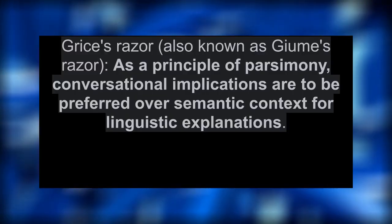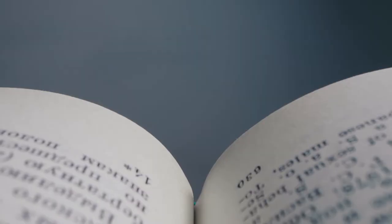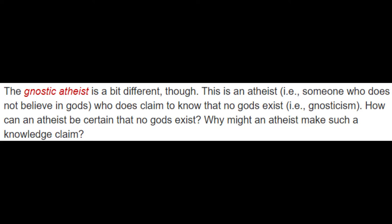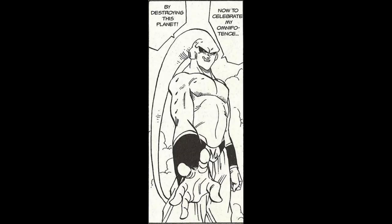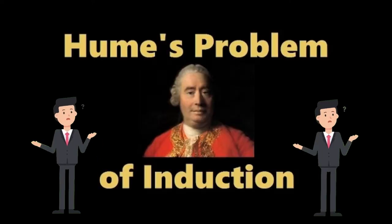Grice's razor also seems complex on the surface but is pretty simple. Wikipedia defines it as a principle of parsimony: conversational implications are to be preferred over semantic context for linguistic explanations. Simply put, Grice's razor says that context for a word or phrase should be preferred to the textbook definition. For example, in a conversation about whether God exists, someone calls themselves a Gnostic Atheist — defined as someone who claims to know God does not exist — but the way they use the term seems more in line with Agnostic Atheist, meaning someone who is not certain whether God exists. Grice's razor is very important in power scaling, which is what I normally do, as a statement like 'Boo being omnipotent,' taken out of context, leads people to think Boo is far stronger than he is.